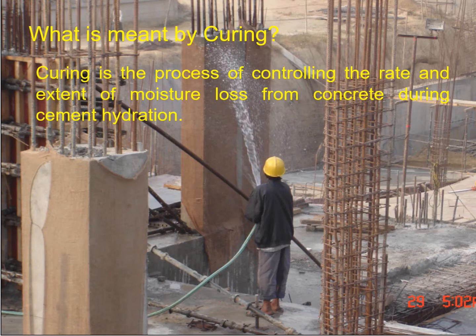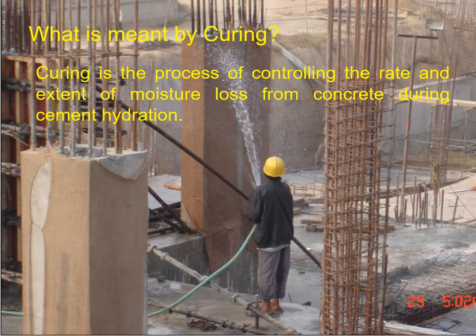At 28 days strength, provided the curing of the concrete is effective and efficient in the project. Curing is basically a process of controlling the rate and extent of moisture loss from the concrete during cement hydration. The effectiveness of curing depends upon how effective your system is in controlling moisture loss. For each concrete pour, we collect a number of cubes and place them in a curing tank for one day, three days, seven days, fourteen days, or 28 days, and that tank is filled with water.